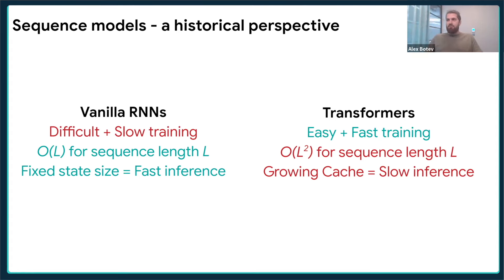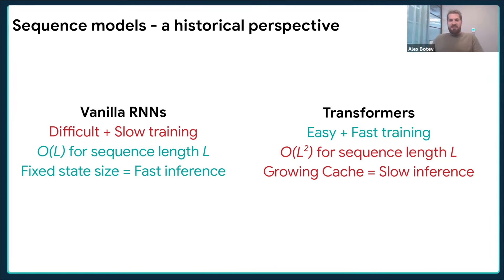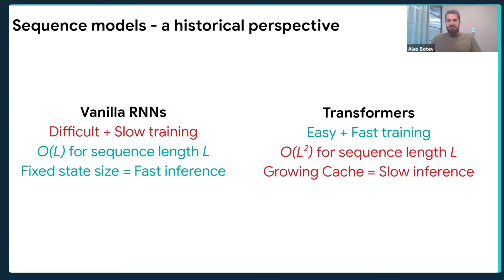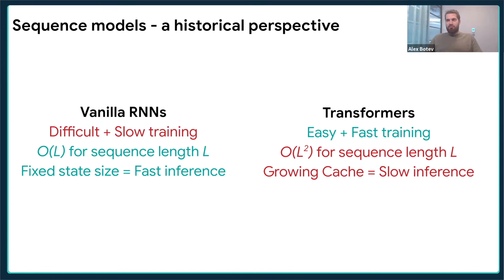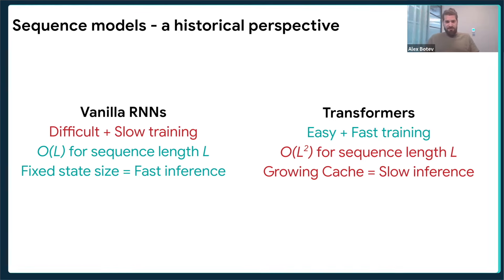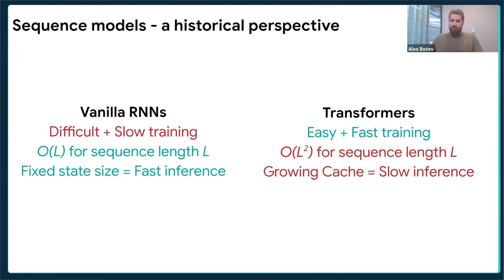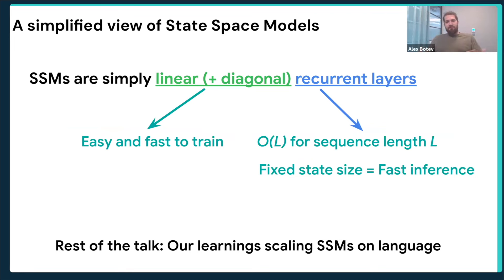However, one of the main drawbacks that is emerging more and more, especially as we look at longer sequences, is that the number of FLOPs transformers need to compute is squared in the sequence length. In addition, because you need to store the key-value cache when predicting new tokens, that starts to make them slower during inference time and more difficult to scale when we increase the sequence length.